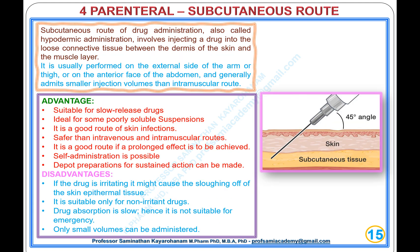Type 4, Parenteral: Subcutaneous Route. The subcutaneous route, also called hypodermic administration, involves injecting a drug into the loose connective tissue between the dermis and the muscle layer. It is usually performed on the external side of the arm or thigh, or on the anterior face of the abdomen, and generally admits smaller injection volumes than the intramuscular route.